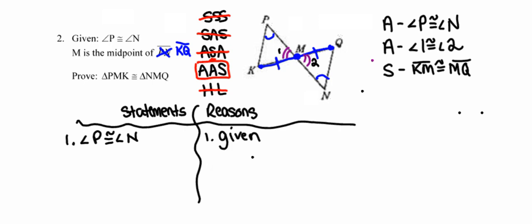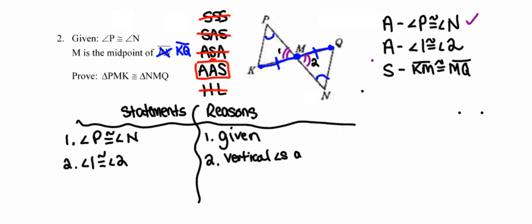Using my outline, item one is checked off. On to item two: angle 1 is congruent to angle 2. The reason we know that's a true statement is that vertical angles are always congruent. Now that I've written about that pair of congruent angles, I can check that off my list.